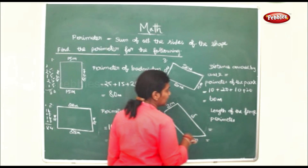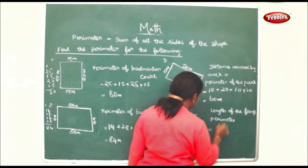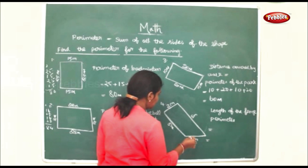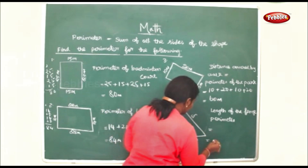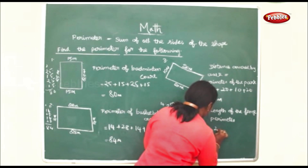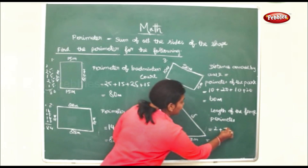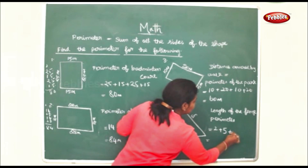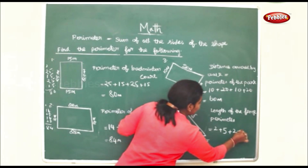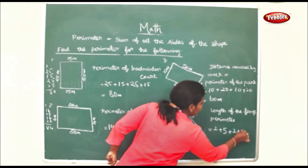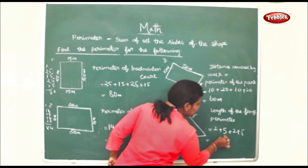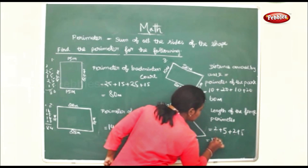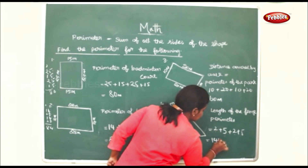The length of the fence will be the perimeter: 2 plus 5 plus 2 plus 5 plus 2 plus 5. That gives us 5 plus 5 is 10, plus 2 is 12, plus 2 is 14 meters.